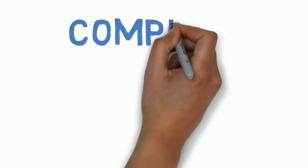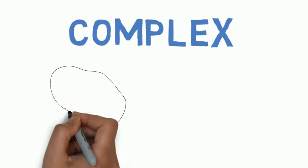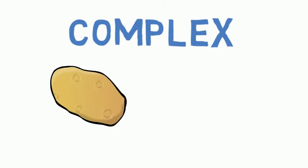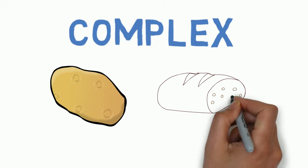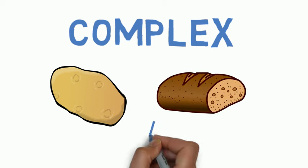Complex carbohydrates give you energy that lasts longer. These include breads, cereals, rice, pasta, and starchy vegetables. Choose breads and cereals that say whole grain because they have more fiber.